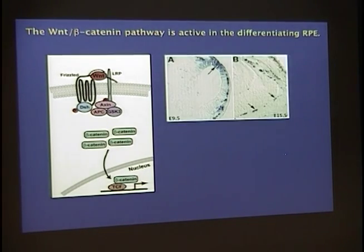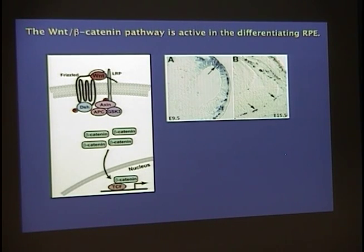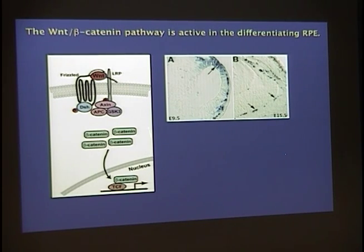This destruction complex is pulled away from the central key player in this pathway, beta-catenin. If Wnts don't bind to the receptor, beta-catenin is continuously produced and degraded, mediated by this destruction complex. When Wnts bind to the receptor, beta-catenin is stabilized in the cytoplasm and can translocate into the nucleus, bind to TCF-LEF transcription factors, and activate transcription of downstream target genes. Several groups have generated reporter mice using a DNA sequence connected to a reporter — in this case LacZ, which encodes beta-galactosidase — and every cell that turns blue has activation of the canonical pathway.